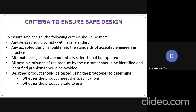Now let us see the criteria to ensure a safe design. If we want to design a product, we have to ensure safety. The first thing is any design should comply with the legal standards for safety — the government has framed some laws regarding the safety of product design, and our design should comply with all these legal standards. Second, any design should meet the standards of accepted engineering practice. There must be some criteria to be met — the parameters should be within a threshold level.